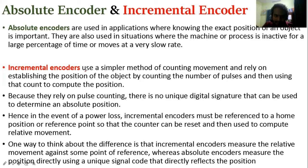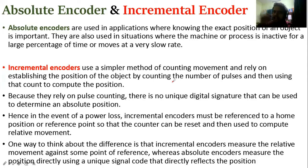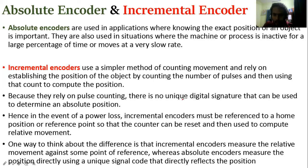Incremental encoders use a simpler method of counting movement and rely on establishing the position of an object by counting the number of pulses, then using that count to compute the position. There is no unique digital signature that can be used to determine an absolute position.